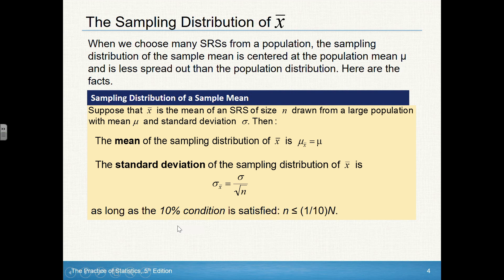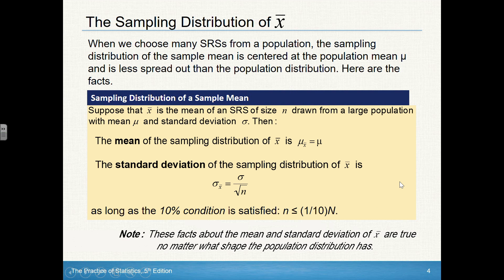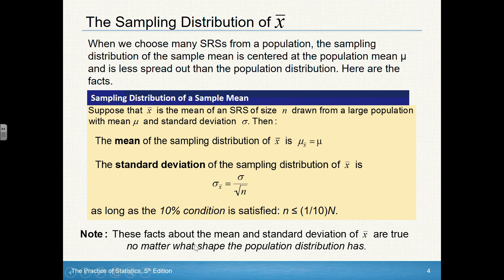As long as the population is at least 10 times the sample size, as long as the 10% condition is met, that's important for us to note there. It says these facts about the mean and standard deviation of x bar are true no matter what the shape of the population distribution has. In the previous slide, we saw that the population was not normally distributed, but we can still use these rules as long as we have the 10% condition met.